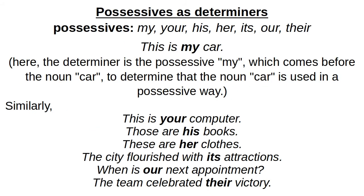Now we have possessives: my, your, his, her, its, our, their. For example, 'this is my car.' Here the determiner is 'my,' which is possessive in nature. Whose car? My car. It comes before the noun 'car' and determines it is used in a possessive way. Similarly, we can have sentences with your, his, her, its, our, their.